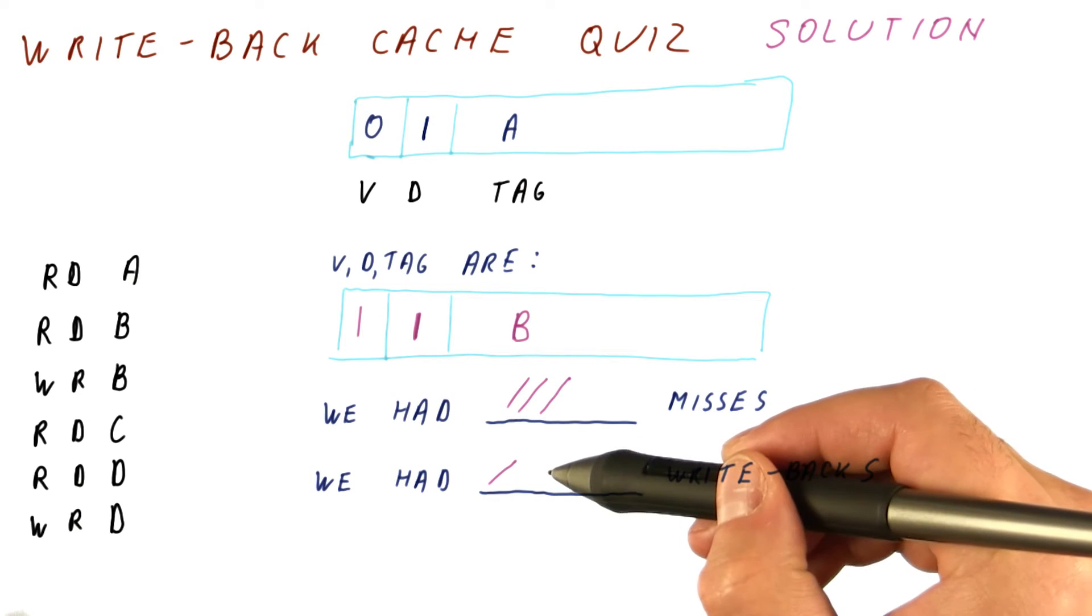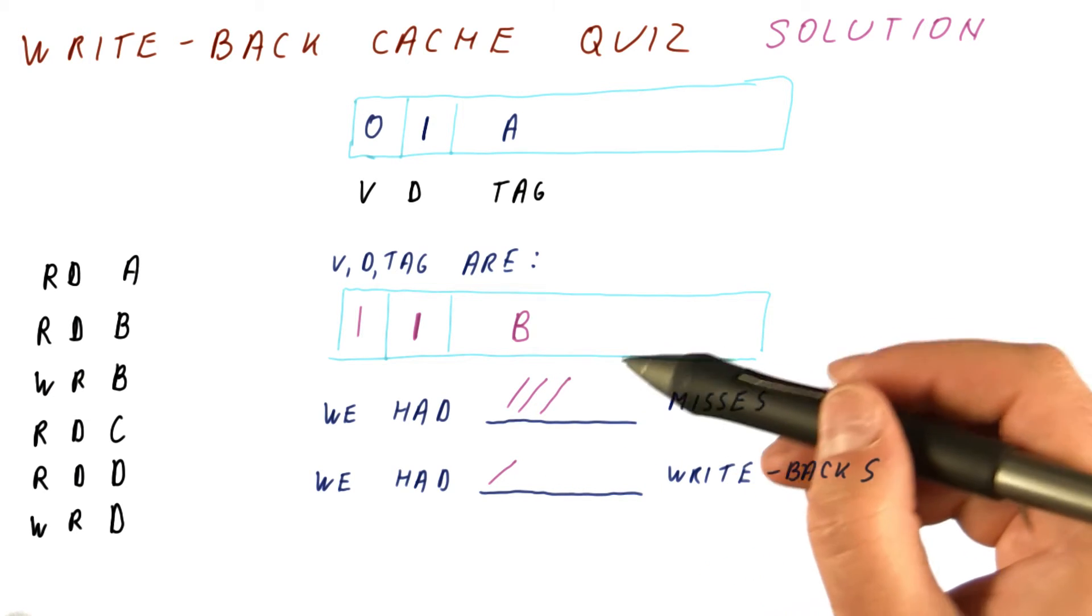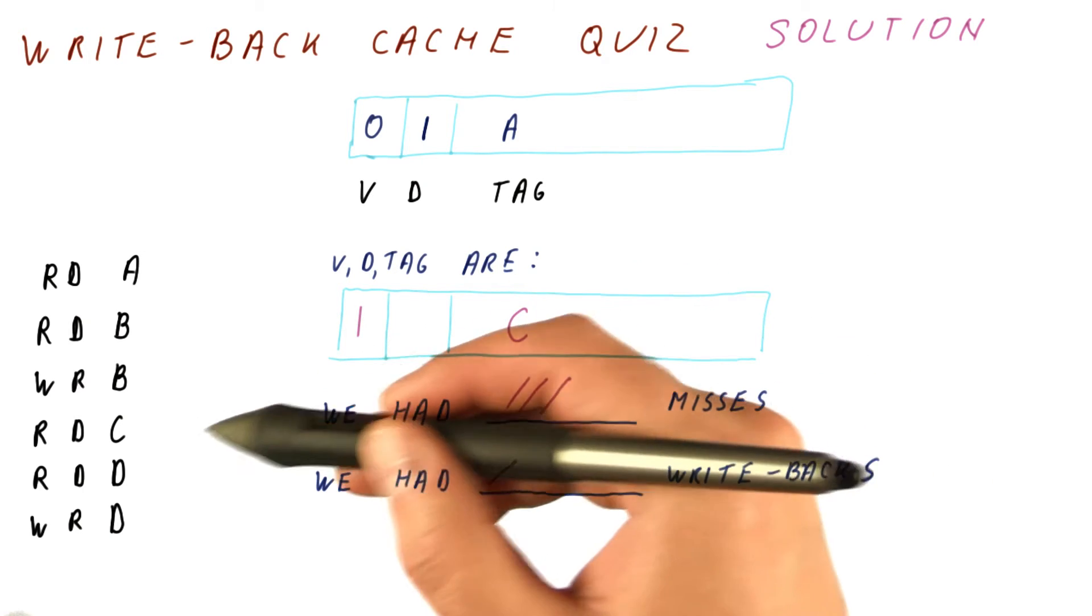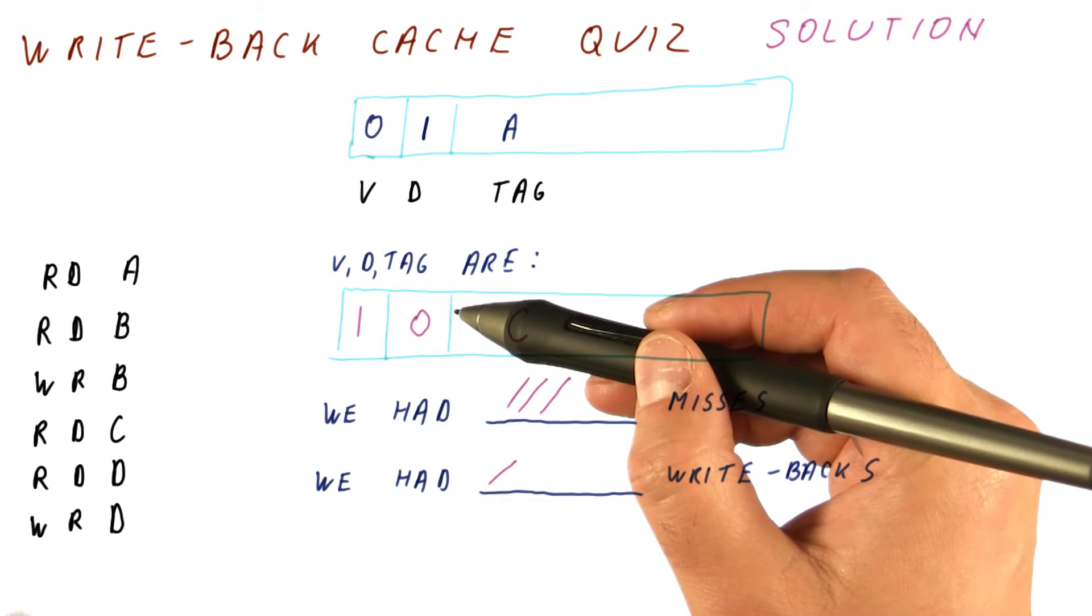We need to write back B to memory. Then we bring in C, set its valid bit to one. Because this is a read, the dirty bit becomes zero.